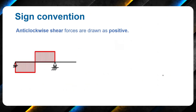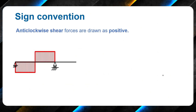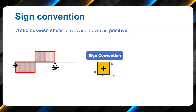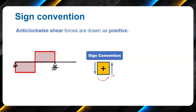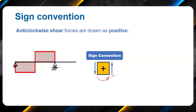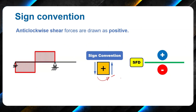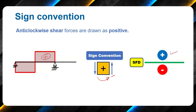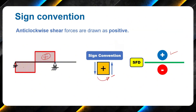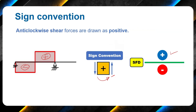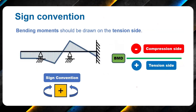The sign conventions I will use for shear force: anti-clockwise shear forces are drawn positive, which means upward forces from the right and downward forces from the left are positive — this creates an anti-clockwise moment. Positive values are drawn above the baseline, and negative values are drawn below the baseline.